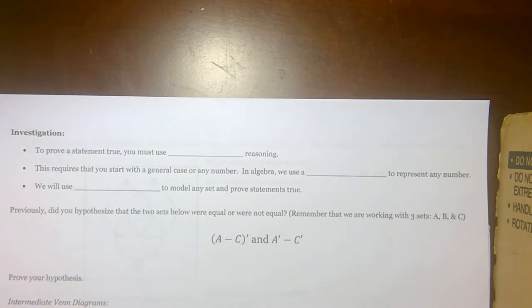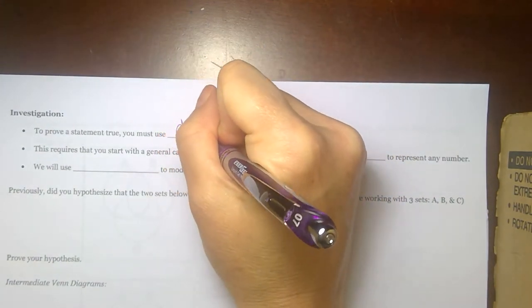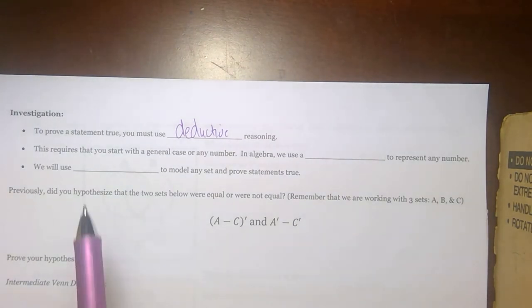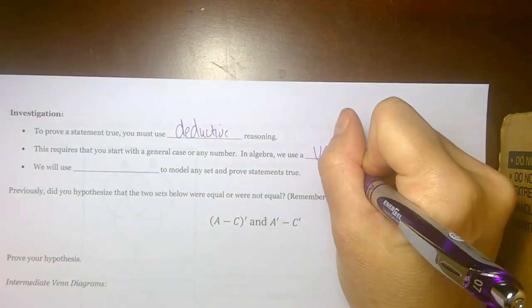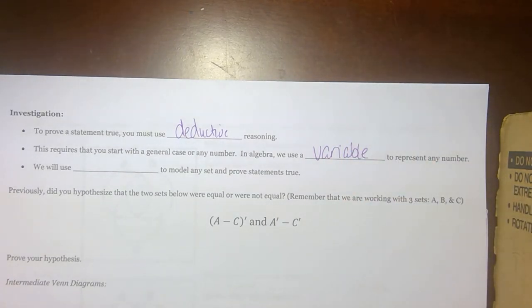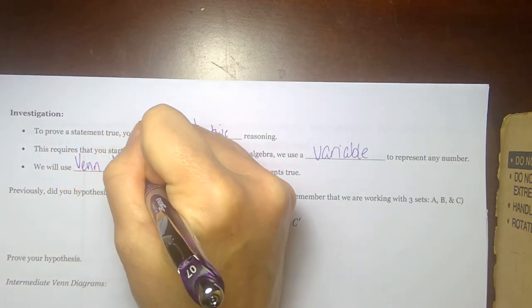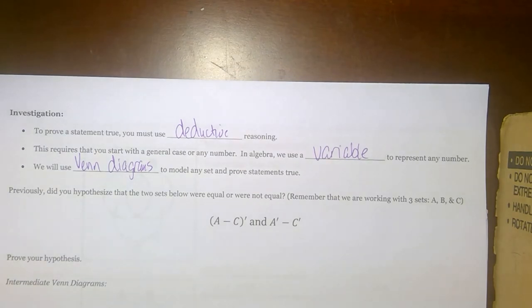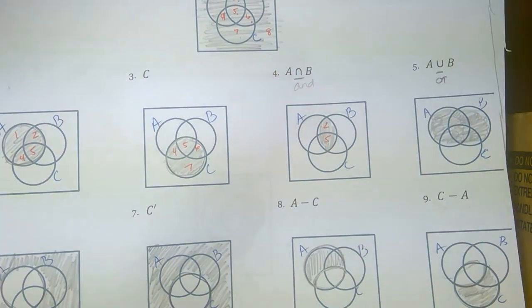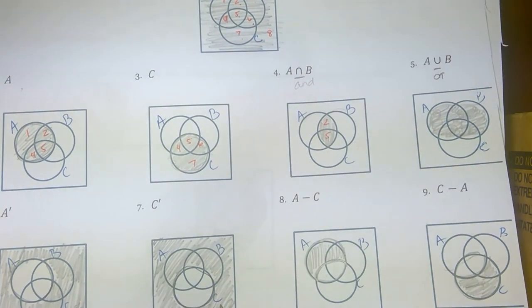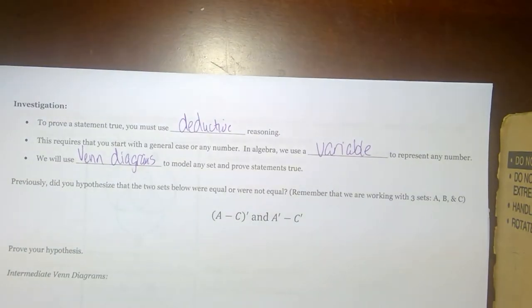We have a little investigation. To prove a statement true, we use deductive reasoning — starting with the general case and moving to specific. This requires a general case or any number. In algebra, we use a variable. In set theory, we use Venn diagrams without values inside, just looking at those general regions to prove statements true. The shading work we've been doing on these last pages is all general Venn diagrams — all deductive reasoning. We don't have specific values for A, B, or C; we're looking at the general shape and the regions that would be shaded.